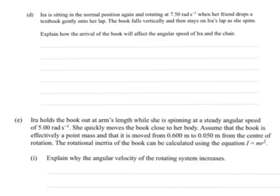Ira is sitting in the normal position again and rotating at 7.50 radians per second. When a friend drops a textbook gently onto her lap, the book falls vertically, then stays on Ira's lap as she spins. Explain how the arrival of the book will affect the angular speed of Ira and the chair.